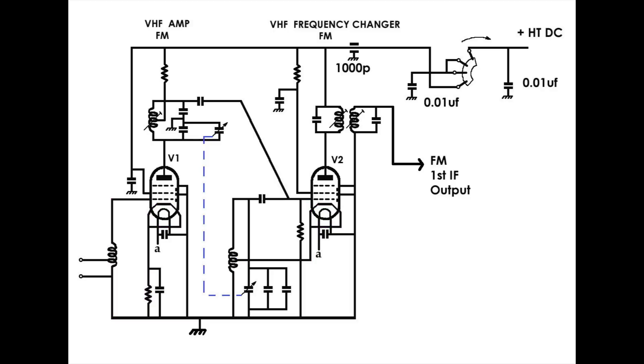The VHF aerial connects to the second turn of that little coil that you see in the bottom left hand corner. And that coil has 6 turns in it, so it's not tuned. It's just acting as a little auto transformer and feeding every signal that it receives into the control grid.